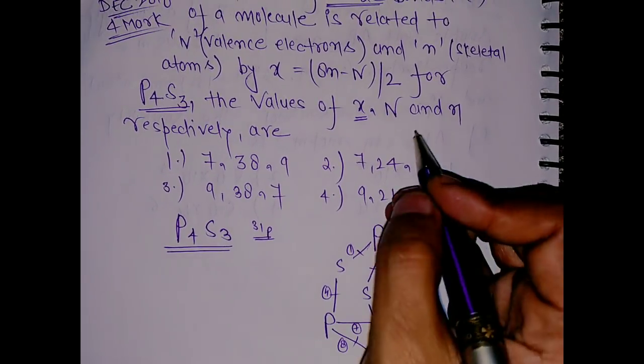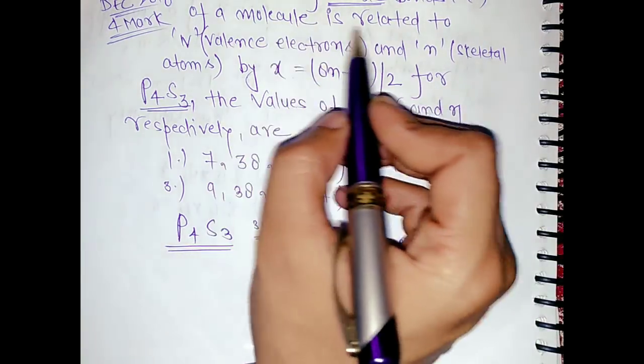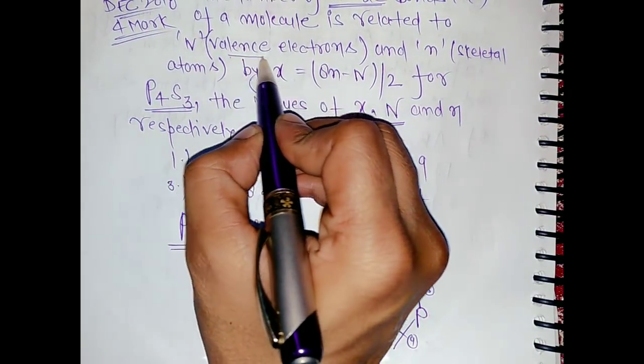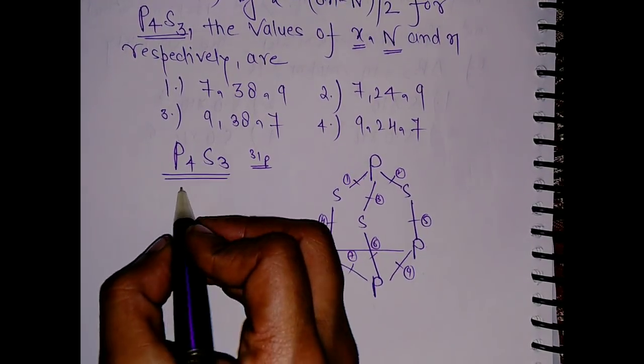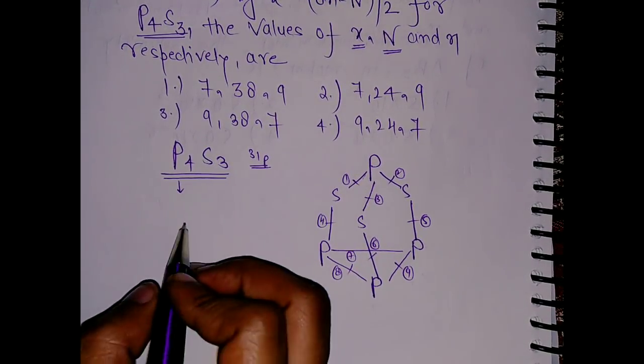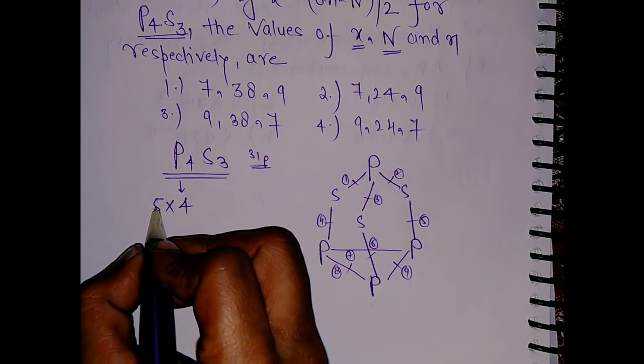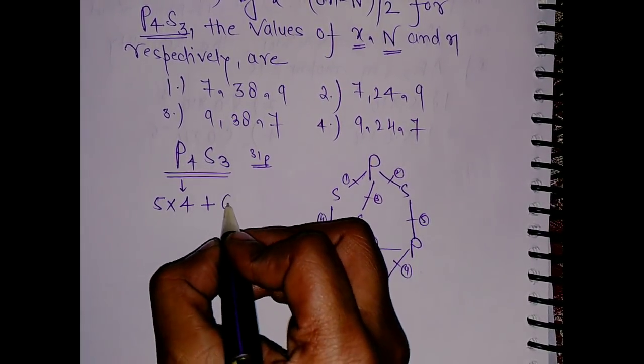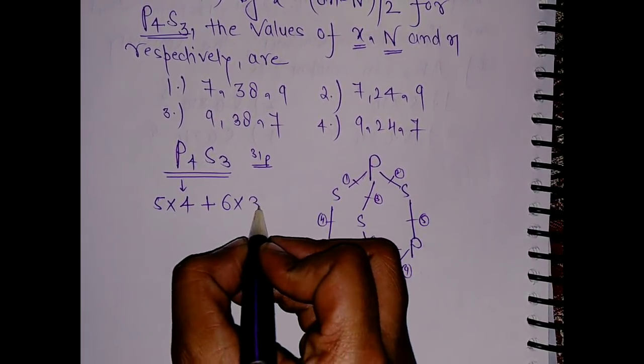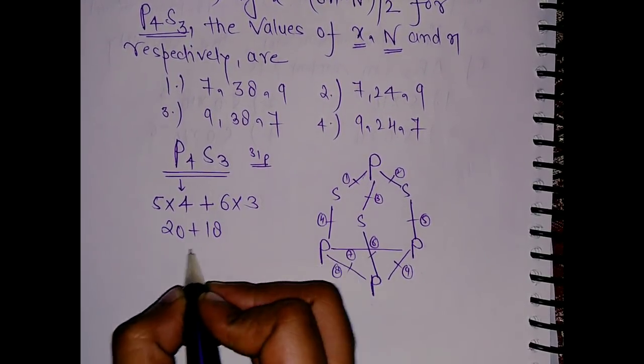We have to calculate n, which is your valence electrons. This is P4S3, so in phosphorus we have five valence electrons, so this is 5 times 4. In sulfur we have six valence electrons, so 6 times 3. This becomes 5 times 4 is 20, plus this is 18, and this is 38.